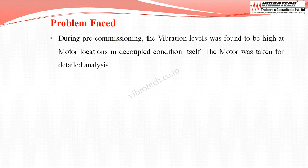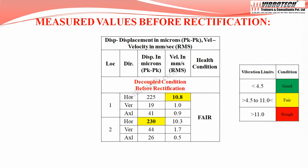During pre-commissioning, the vibration levels were found to be high at motor locations in the decoupled condition itself. The motor was taken for detailed analysis. Before rectification, in the decoupled condition, the vibration values are maximum at the motor non-drive end horizontal — velocity up to 10.8 mm/s rms and displacement of 230 microns peak to peak — placing the equipment in the fair category.